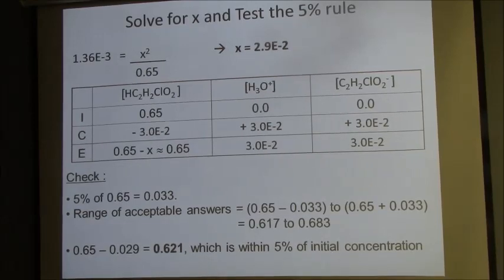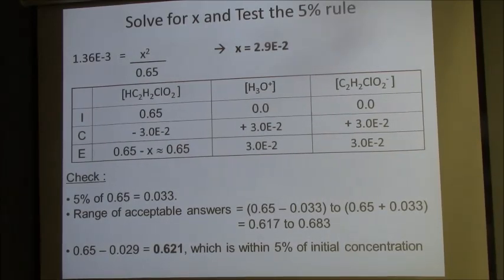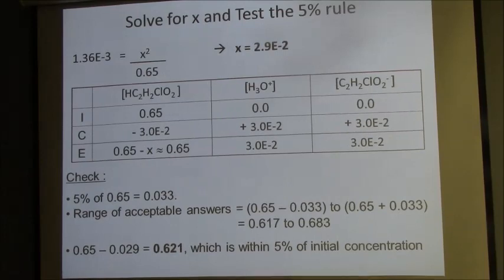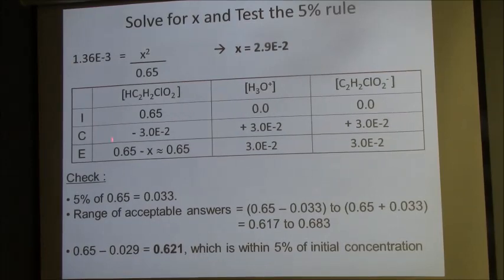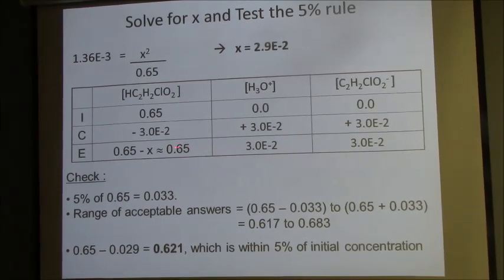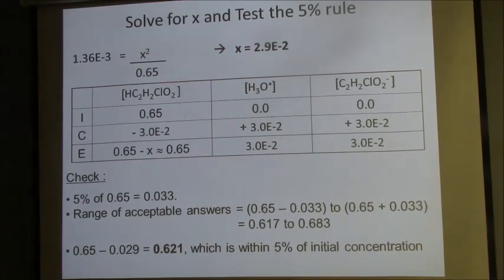Every now and then, something strange might happen. But by far and large, the vast majority of time, if you're dealing with K less than 1, you can just go ahead and assume that at equilibrium, the equilibrium concentration of your reactant really doesn't change all that much. That's how we use the 5% approximation.